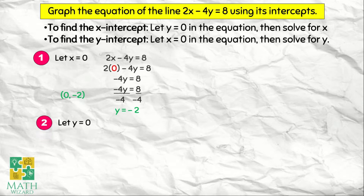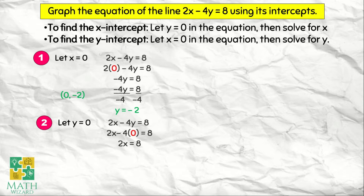The second step: we let y equal to 0. So we have 2x minus 4y is equal to 8, and y becomes 0. This becomes 2x minus 4 times 0 is equal to 8. Simplifying, 2x is equal to 8. To find the value of x, we divide both sides by 2, so x is equal to 4. Our second point is (4, 0).